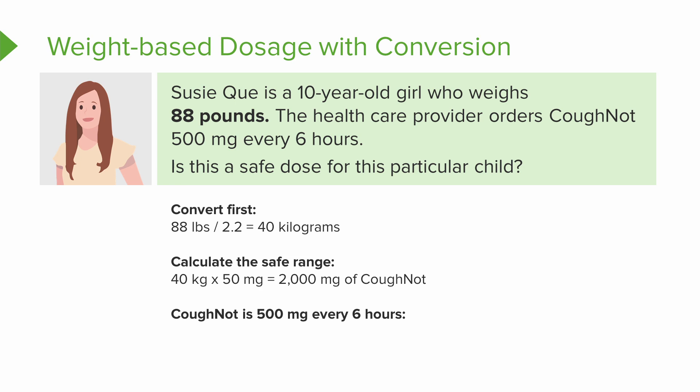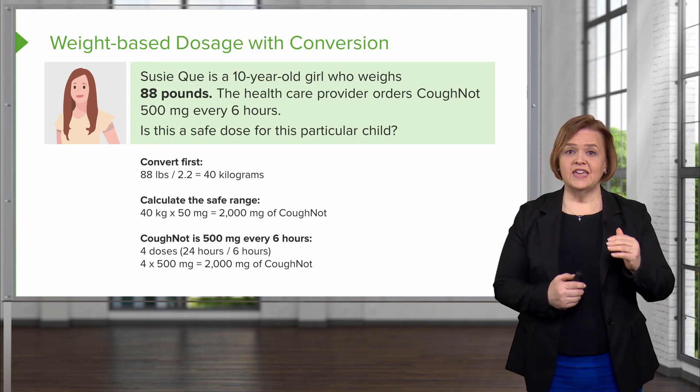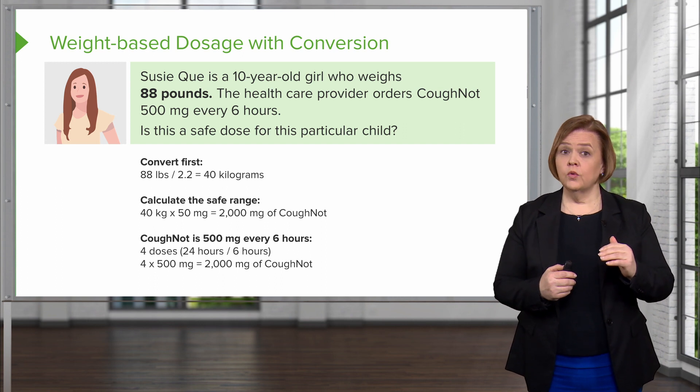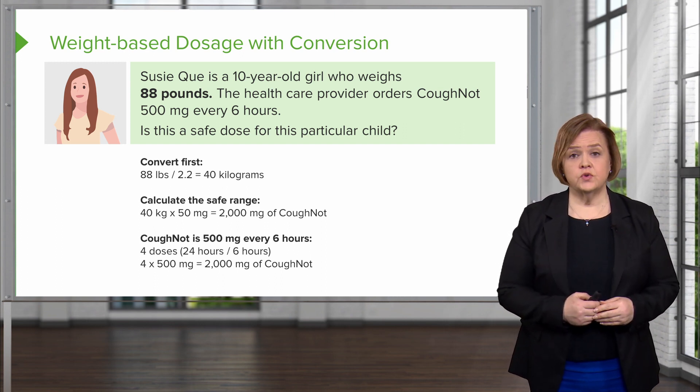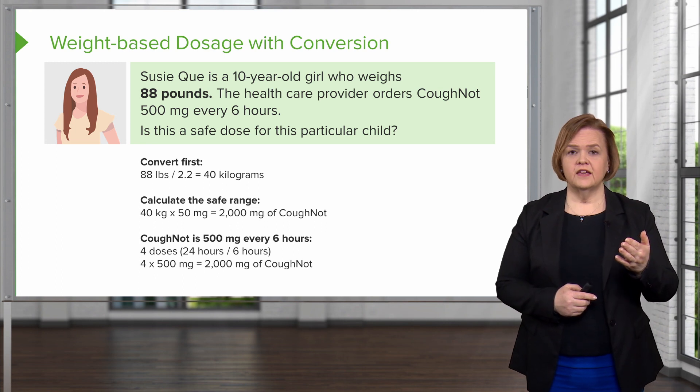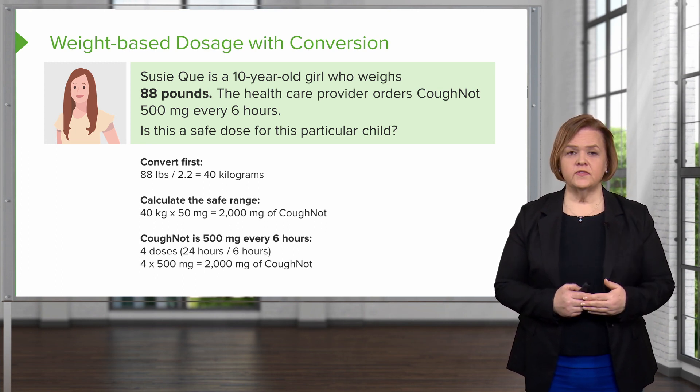COFNOT is ordered at 500 milligrams every six hours. We've got the right order, so we're going to give it every six hours. 24 hours divided by six gives us four doses. Each divided dose is 500 milligrams, so four times 500 equals 2,000 milligrams of COFNOT. The weight-based safe range is 2,000 milligrams, and we're going to give 2,000 milligrams. So is this safe? Yes, it is.